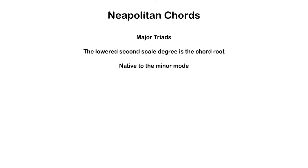In the major mode they'll take two accidentals instead of just one — in addition to the lowered second scale degree, we also have to include the lowered sixth scale degree, which is characteristic of most chords we consider mixture chords or modal borrowings. They frequently occur in first inversion — so frequently, in fact, many people call these Neapolitan sixth chords, with the 'sixth' referring to the inversional symbol for a triad in first inversion.